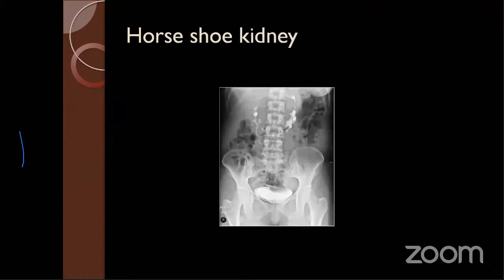In another IVU example showing horseshoe kidney: you can see the kidney outlines fused at the lower poles in front of the vertebral body, appearing like a horseshoe magnet. Ideally the two kidneys should be separate, but here they are fused — this is horseshoe kidney. Radiology requires exposure to multiple X-rays to learn properly.